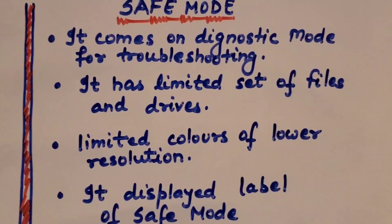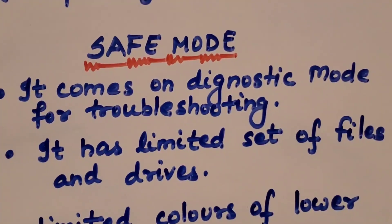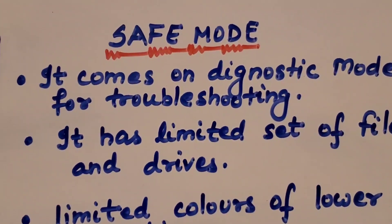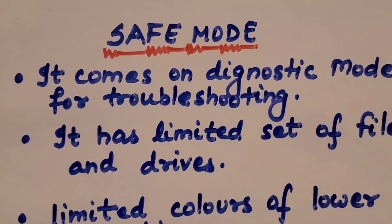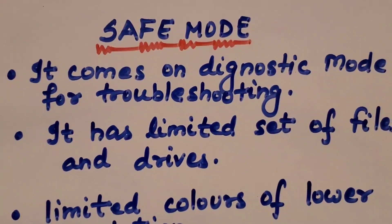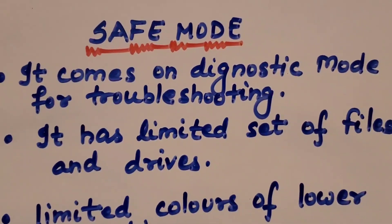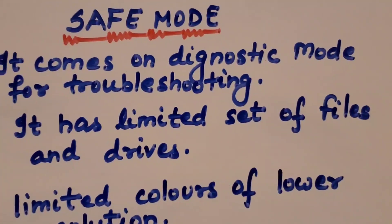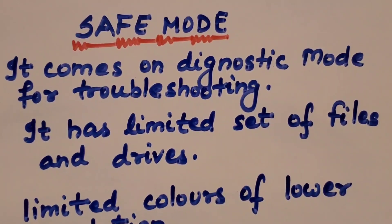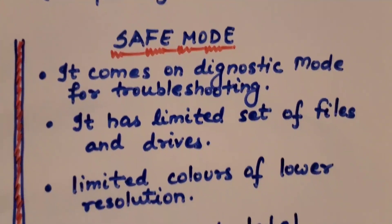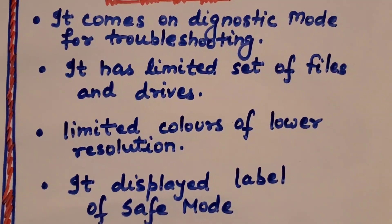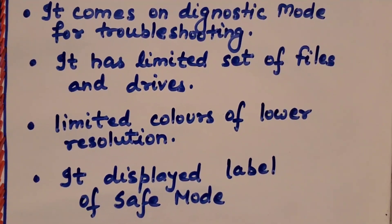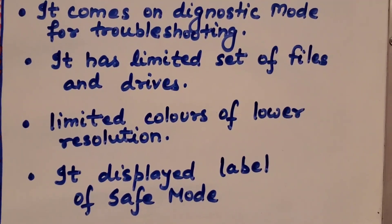Now we reach safe mode. Safe mode comes in diagnostic mode — it is used for troubleshooting. For example, some guests are called for your help, like a tutor — a tutor is not allowed to roam every room or take any action in the house. Same with safe mode: it is a diagnostic mode for troubleshooting. It has a limited set of files and drives — this mode will not go to other files and drives. It has very few colors of lower resolution. And when you use safe mode, it will show you a label at the end: 'Switch off by safe mode.'